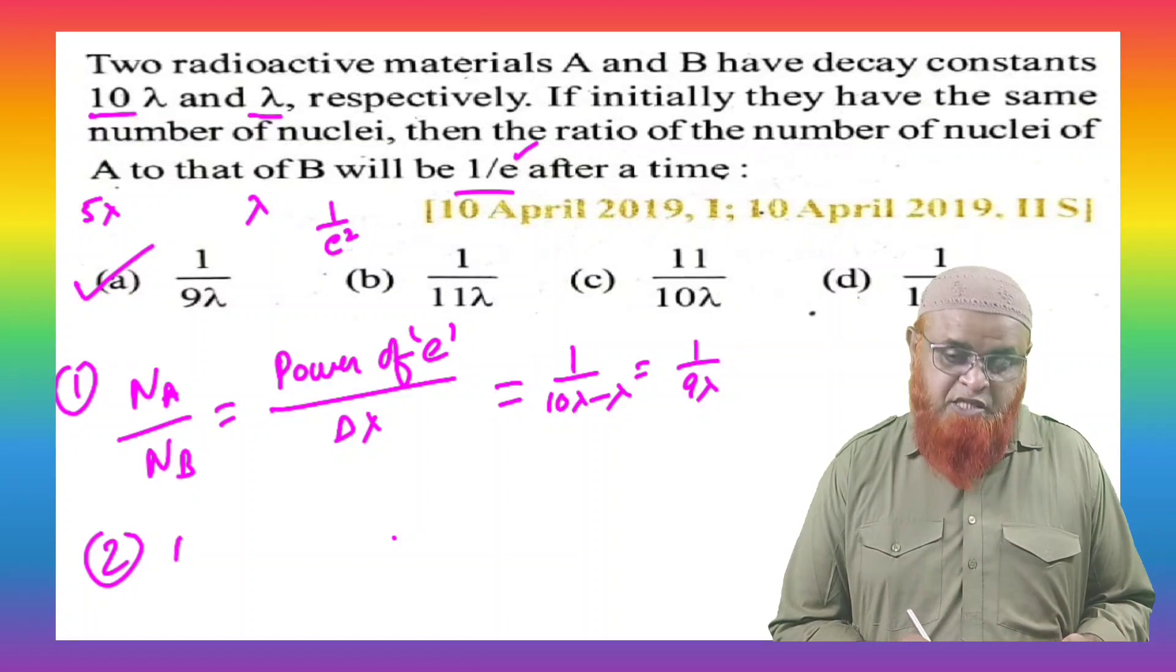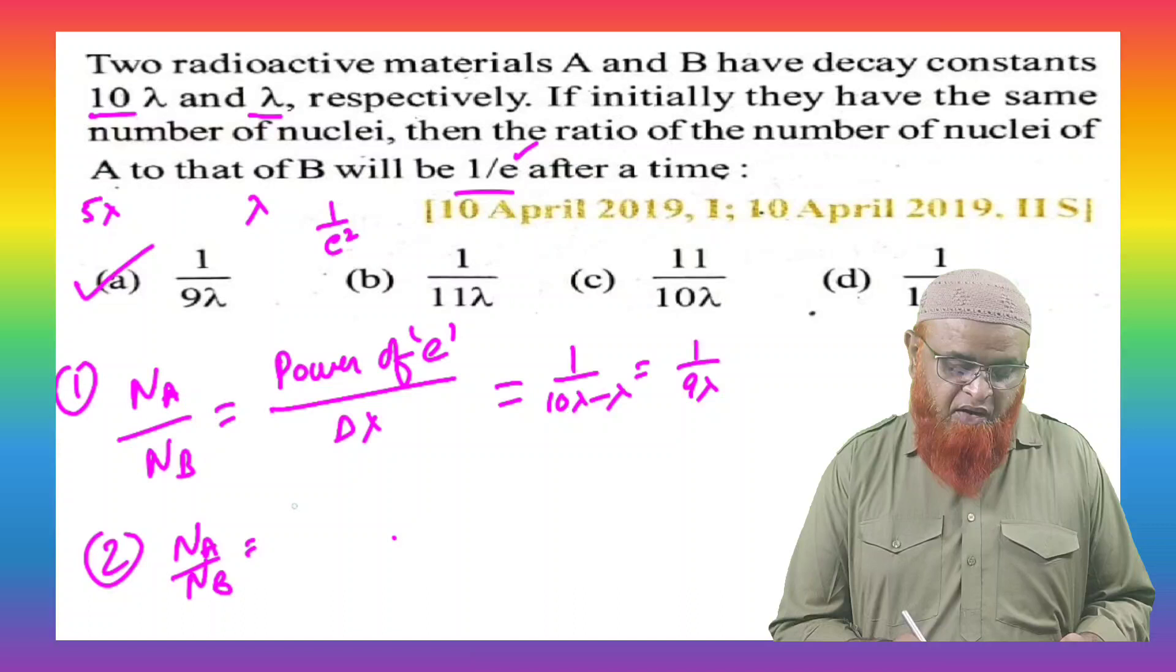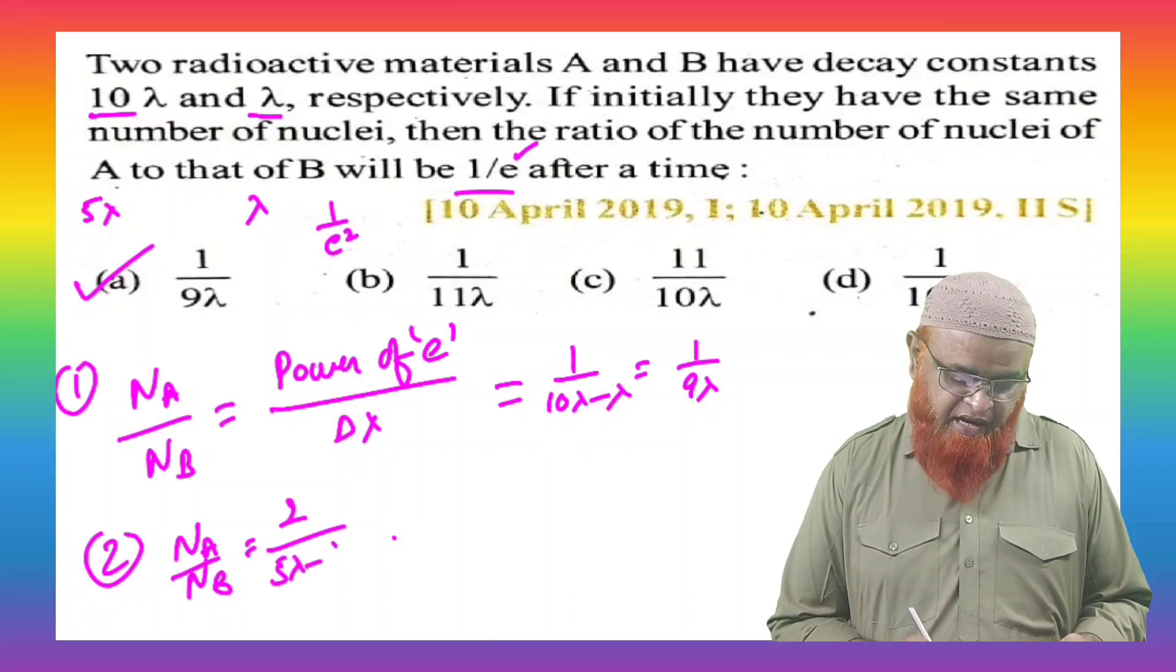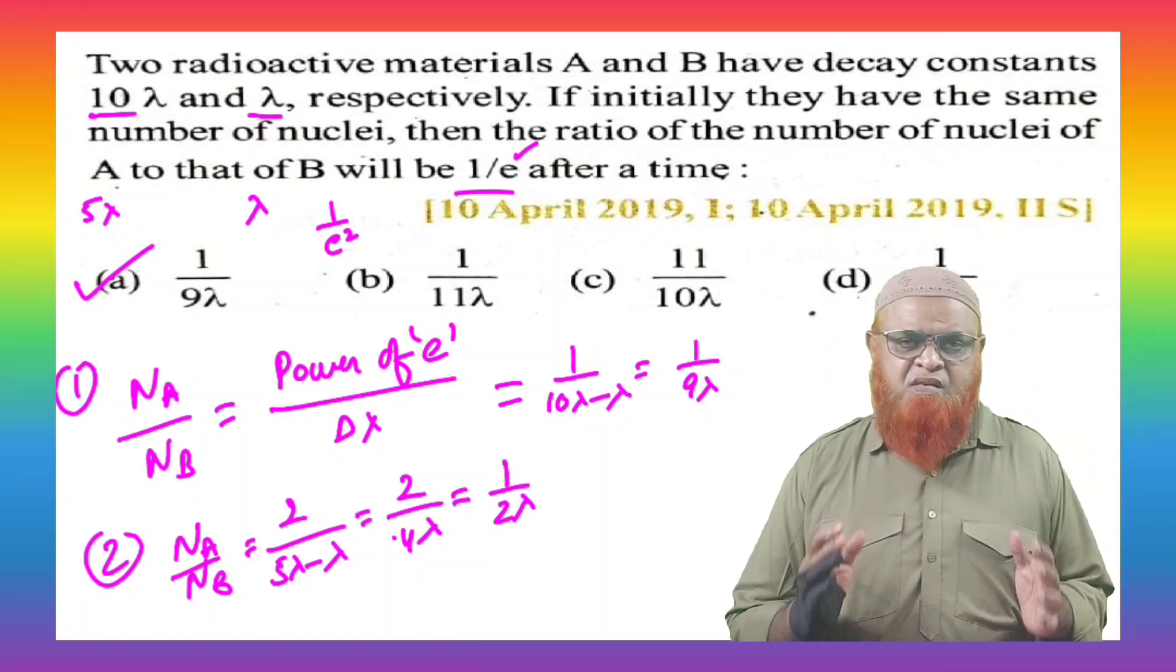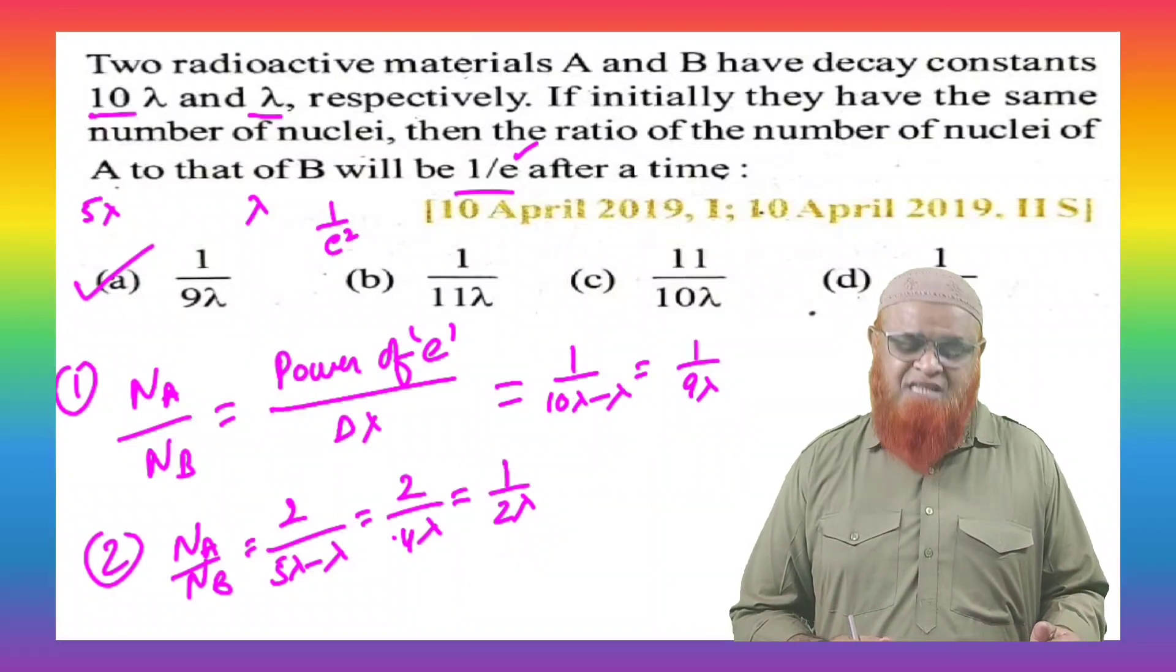And the same formula that is power of E by delta lambda. So NA by NB can be written as power of E is taken as 2, and delta lambda can be taken as 5 lambda minus lambda, which is nothing but 2 by 4 lambda. And that is going to be 1 by 2 lambda. So this is a simple shortcut formula. You can solve any problem of this type.